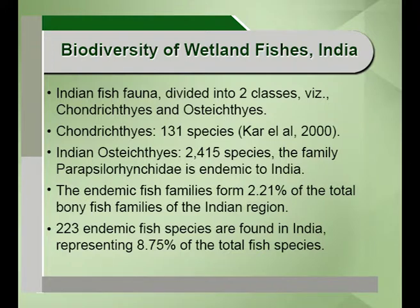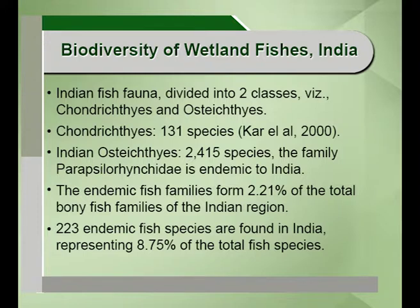Regarding the biodiversity of wetland fishes in India, they can be divided into two classes: Chondrichthyes with 131 species and Osteichthyes with 2,415 species. The family Parapsilorhynchidae is endemic to India, and there are 223 endemic fish species in India, representing 8.7 to 8.8 percent of total fish species in India, while 2.21 percent of bony fish families are also endemic to the region.